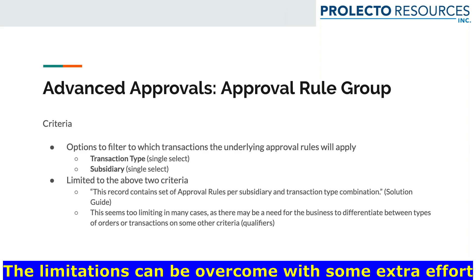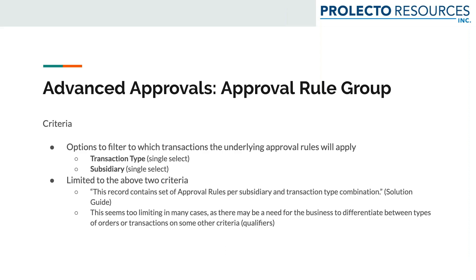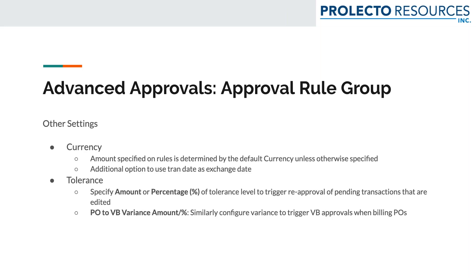For example, with one of our current clients, there's a different approvals routing if it's an R&D expense versus a production expense. That's exactly what I'm referring to — something driving a totally different set of rules based on transaction data, which this bundle doesn't really support. The tolerance feature is very interesting: you can specify a tolerance level that will trigger a reset of all approvals that have occurred. So if a transaction already went through two approvals and was edited beyond a certain threshold — either by percentage or amount — it will reset all prior approvals.